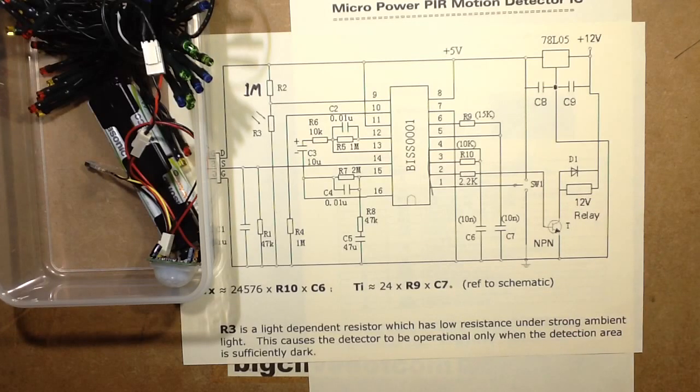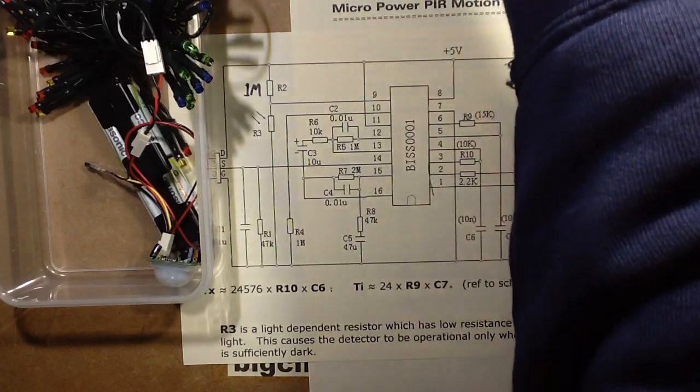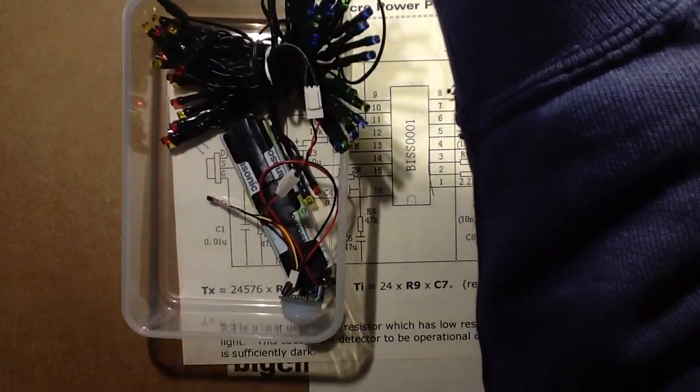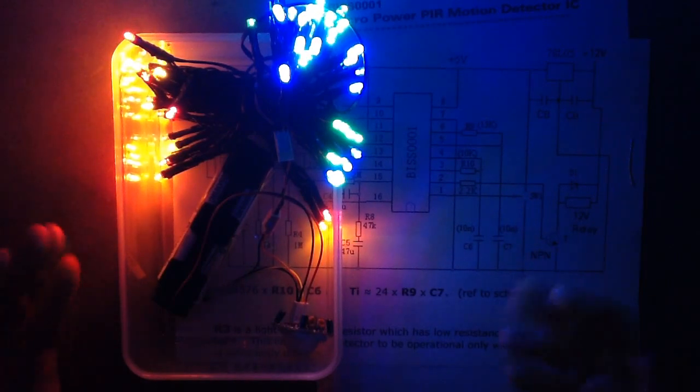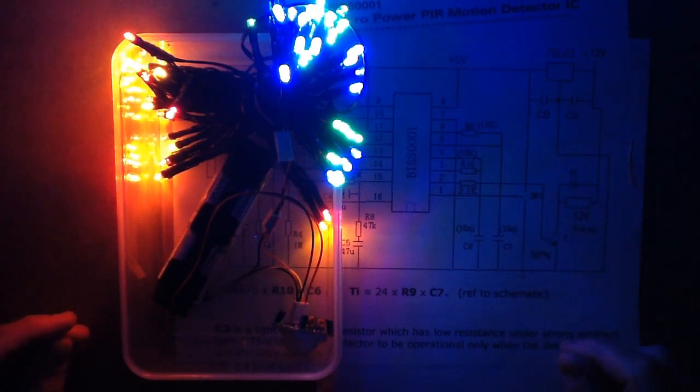The only way I can really test this is to turn all the lights off in here, so I'm going to do that right now. So now in the dark the sensor should be picking me up. If I just move now, and there it goes. So that does work. That's pretty good. That's a very useful feature to have, that you can actually add the LDR to make it only operate when it's fairly dark.